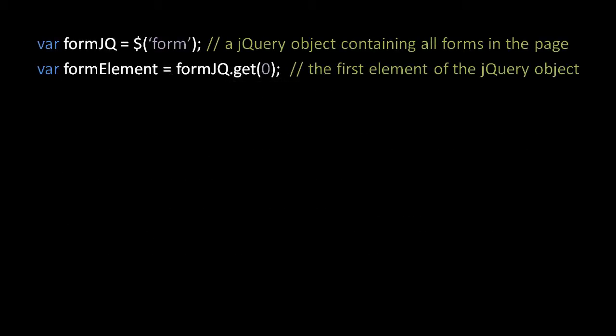jQuery doesn't abstract over all of the functionality of the DOM, so in some cases you'll need to deal with raw DOM elements. One capability we need is a means to get at the actual DOM element objects wrapped by a jQuery object. To this end, jQuery objects have a method called get, which returns a single DOM element.